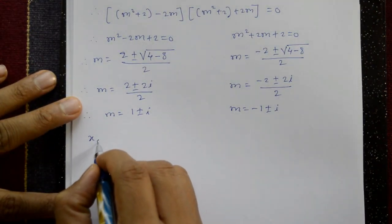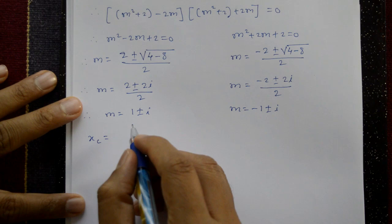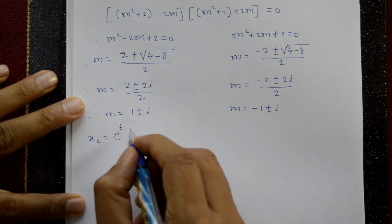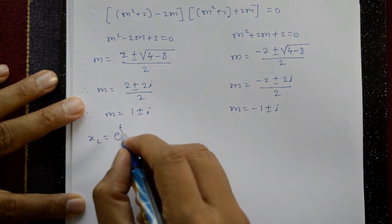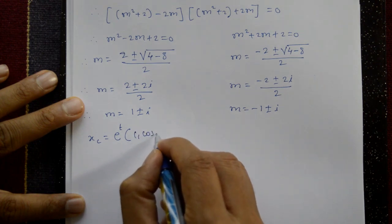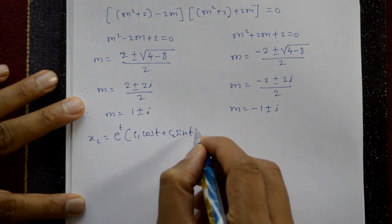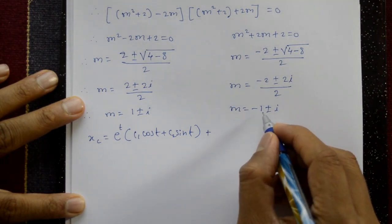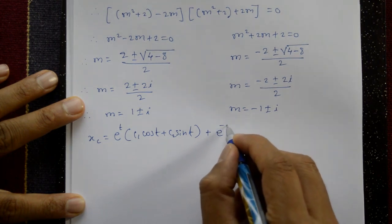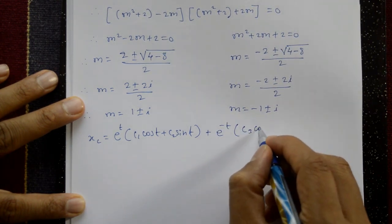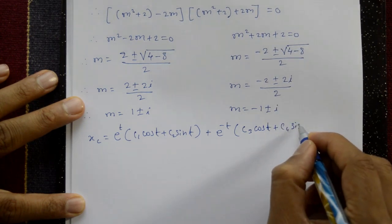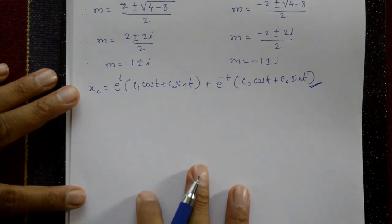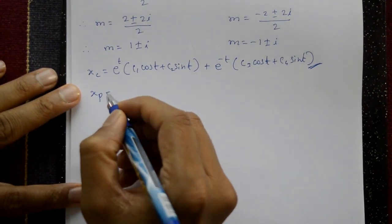The complementary function: with roots α ± iβ where α = 1 and β = 1 for the first pair, and α = -1 for the second pair: xc = e^t(c₁cos(t) + c₂sin(t)) + e^(-t)(c₃cos(t) + c₄sin(t)).